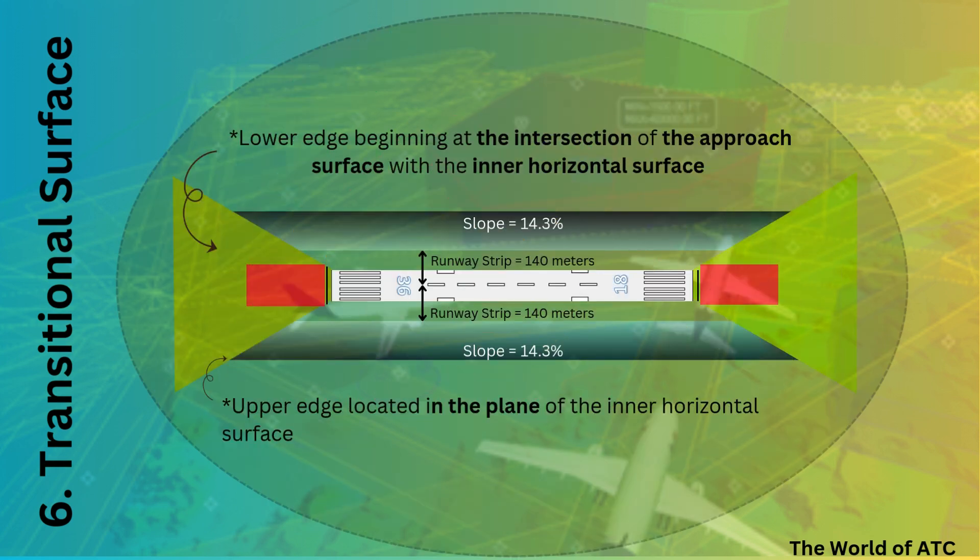Now let's zoom in and study the transitional surface in detail, including its limits. The limits comprise two edges: the lower edge and the upper edge. The lower edge begins at the intersection of the side of the approach surface with the inner horizontal surface, extends down the side of the approach surface to the inner edge of the approach surface, and from there along the length of the strip parallel to the runway. The upper edge is located in the plane of the inner horizontal surface.